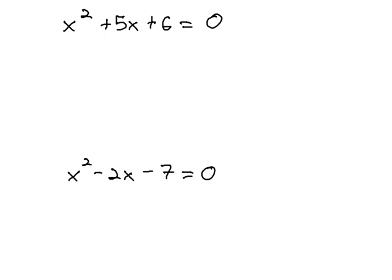In this video, we're going to review how we solved quadratic equations such as x squared plus 5x plus 6 equals 0 and demonstrate how this one method is not sufficient to solve any type of quadratic equation. For example, x squared minus 2x minus 7 equals 0.